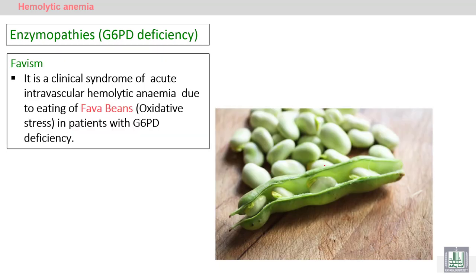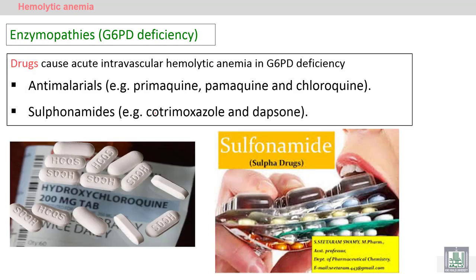A specific type of G6PD deficiency is favism, caused by exposure to fava beans, which are oxidative stress dietary agents, leading to intravascular hemolytic anemia in infants or children. Exposure to certain drugs such as anti-malarial drugs or sulfonamides — which are also oxidative stressors — may similarly lead to acute intravascular hemolytic anemia.